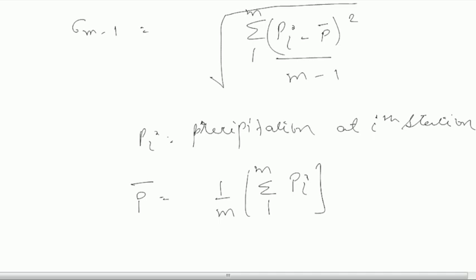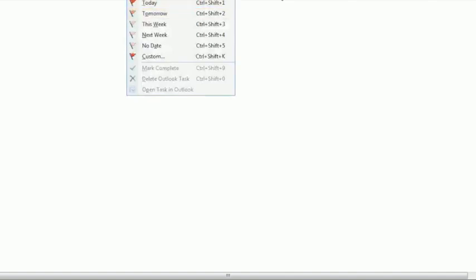So that's how you calculate sigma M-1 and P bar. You will put all these values in CV to calculate CV, and then by putting down the values of CV you will calculate the value of N. Epsilon is already known to you. Now we shall solve one numerical example to clear our concept more about this.